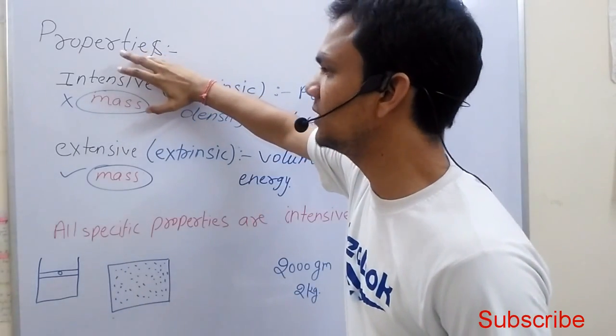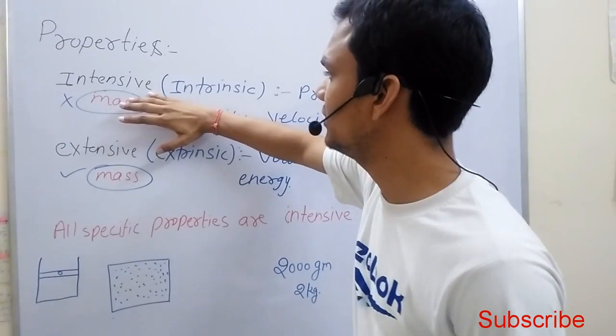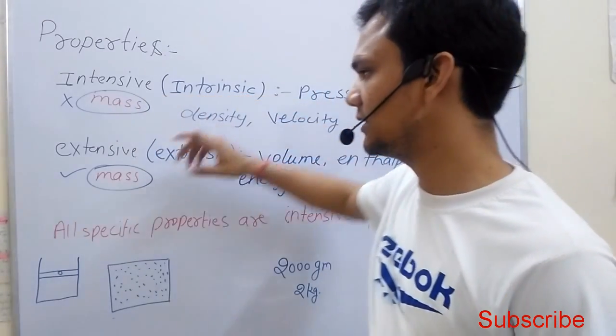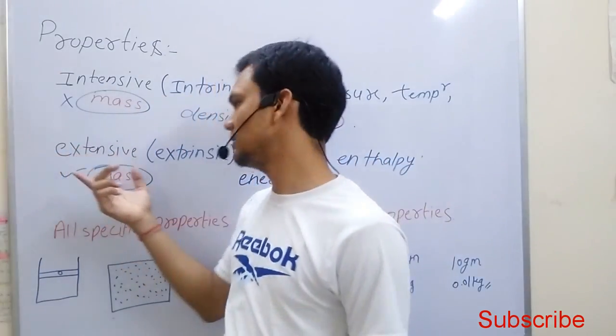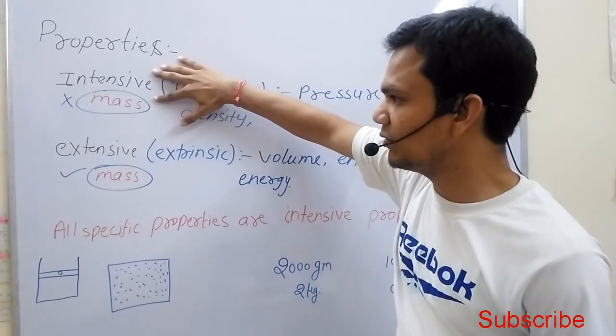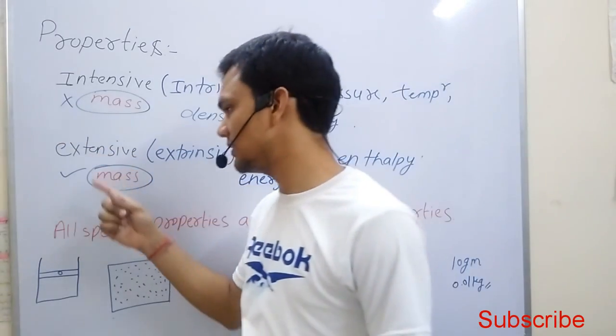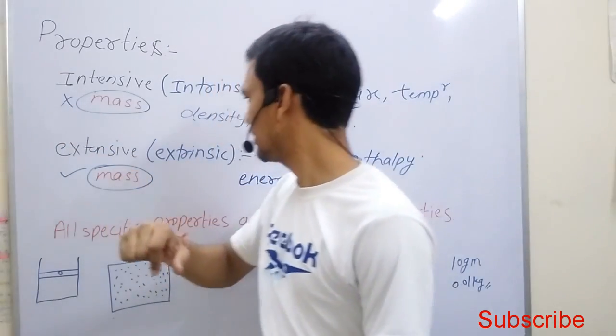Properties of the system are mainly of two types: intensive properties, or intrinsic properties, and extensive properties, or extrinsic properties. Intensive properties are independent of mass, but extensive properties are dependent on mass.